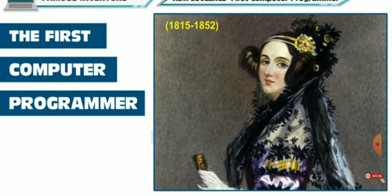Ada Lovelace, born in 1815 as Augusta Ada Byron, was an English mathematician and writer. She has been called the world's first computer programmer. She died in 1852.